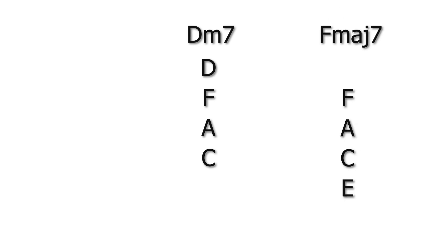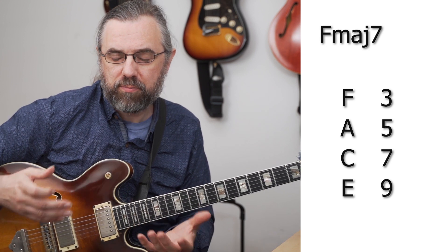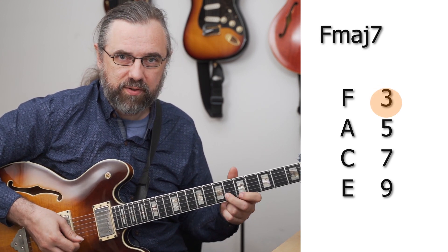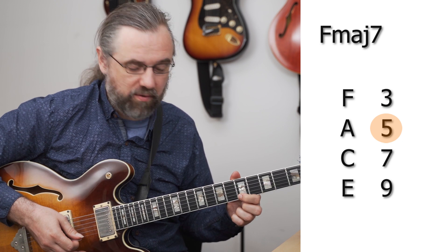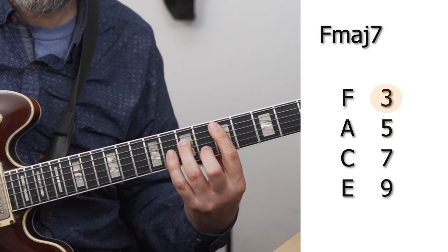If you know the notes of a D minor seven and an F major seven arpeggio, you also know how to relate the F major seven arpeggio to the D minor root. That's really important because you want to know what those notes sound like on top of a D minor chord. You need to know that the first note is a third, then the fifth, the seventh, and the ninth — and what they sound like.